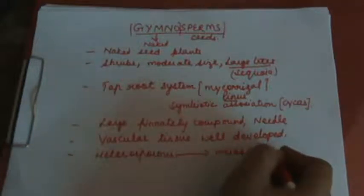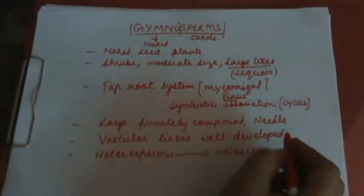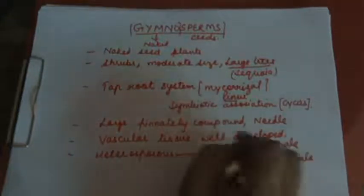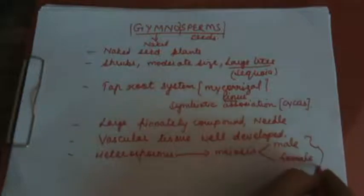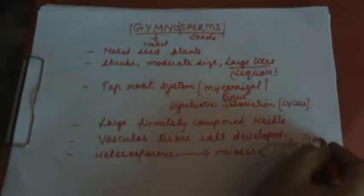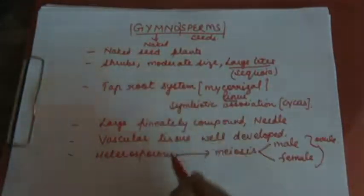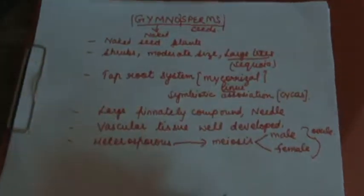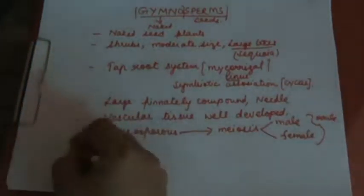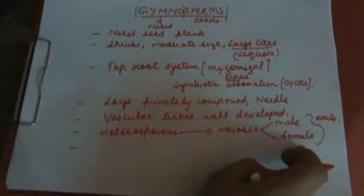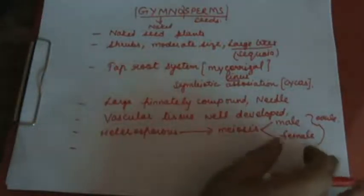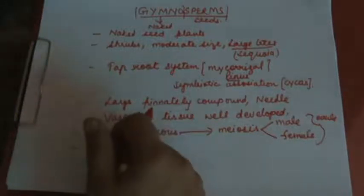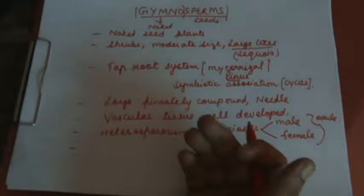After meiosis, spores develop into male and female gametes within the ovule. Two or more archegonia are formed in the female gametophyte. Then the pollen grains are carried by wind and deposited on the ovules.